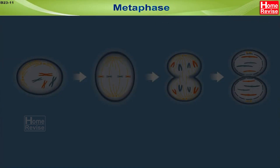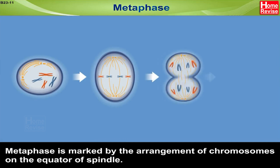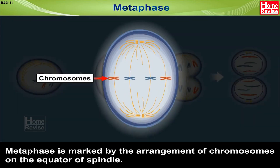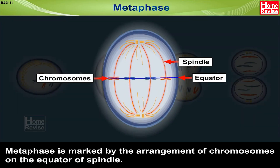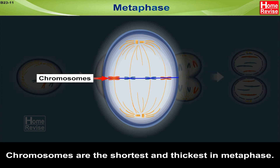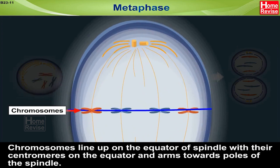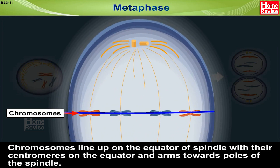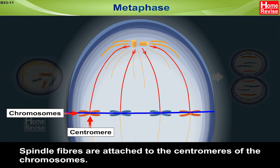2. Metaphase: Metaphase is marked by the arrangement of chromosomes on the equator of the spindle. Chromosomes are the shortest and thickest in metaphase. Chromosomes line up on the equator of the spindle with their centromeres on the equator and arms towards the poles of the spindle. Spindle fibers are attached to the centromeres of the chromosomes.